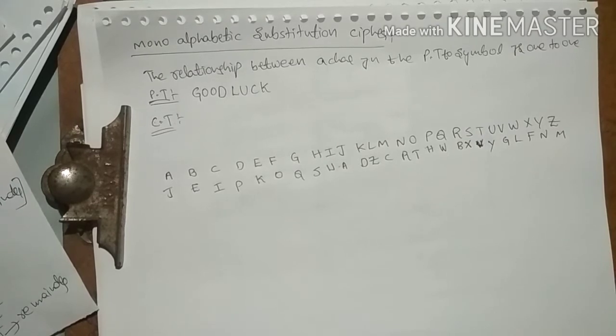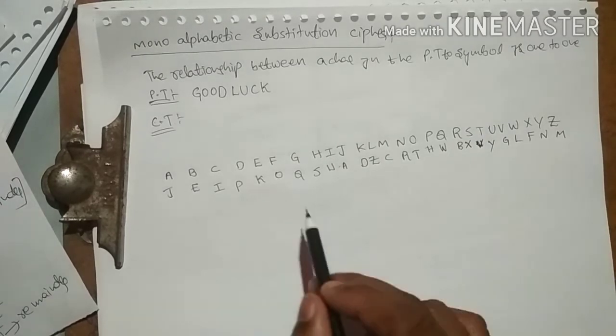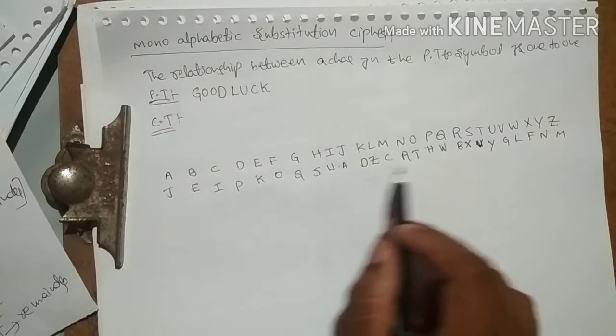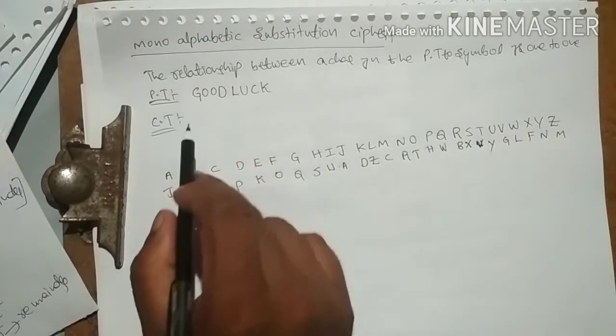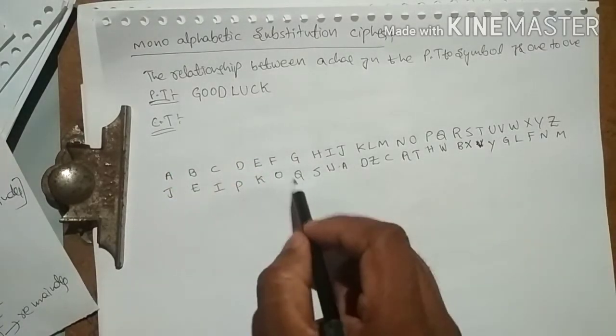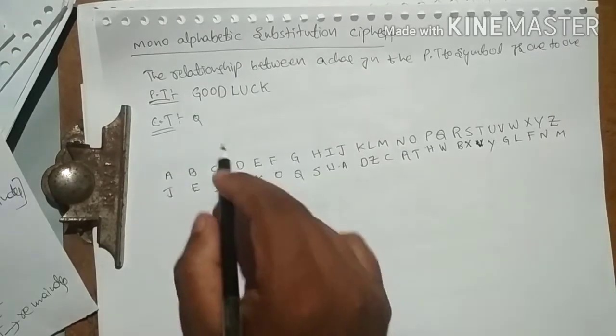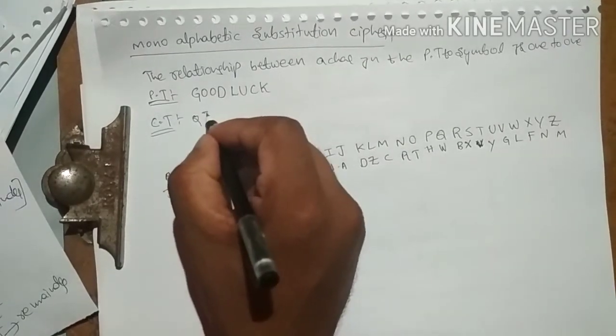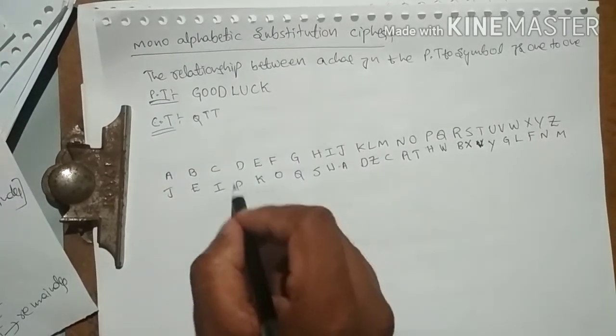So according to these combinations, we have to choose a cipher text. G means Q, O means T.